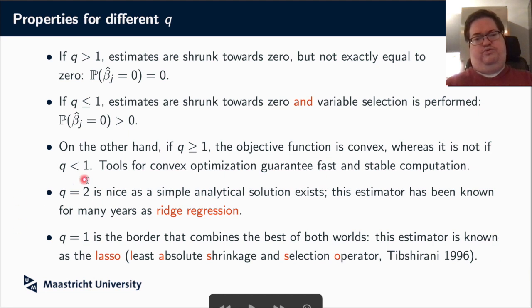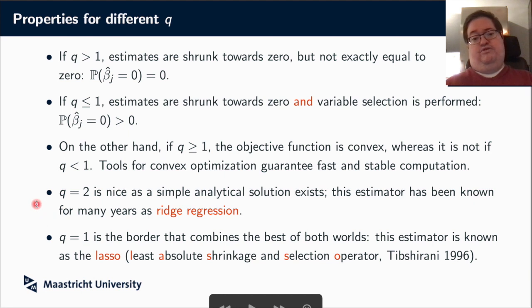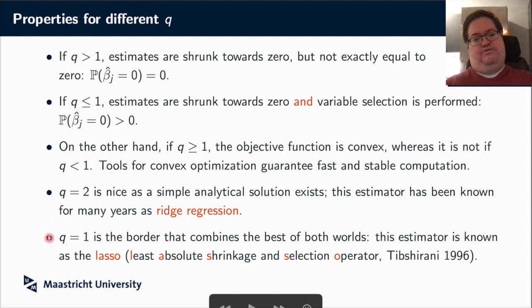First we go to Q equal to 2, because for Q equal to 2 we get very nice simple analytical solutions. This is called ridge regression — it is very old, and because no numerical optimization is needed, everything has an analytical solution. Ridge regression illustrates key ideas such as the bias-variance trade-off that underlies penalized regression. We will first study this and then in the next lecture start studying the LASSO.